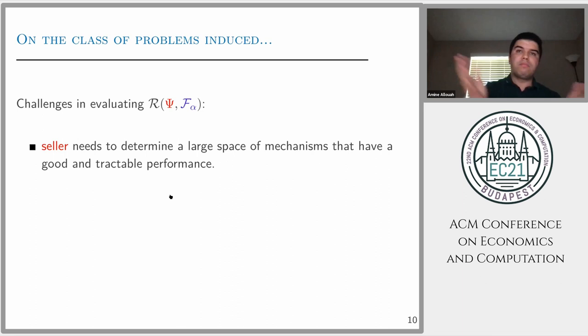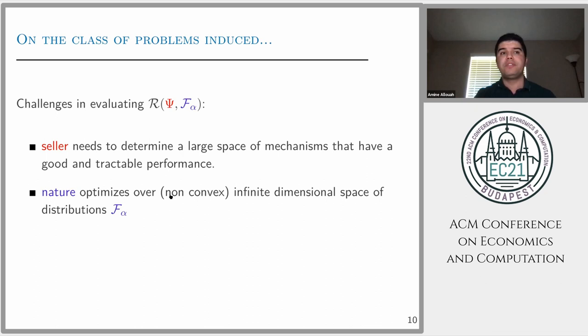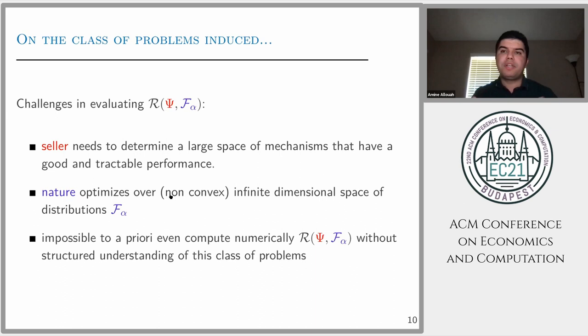Now let's step back and think about this problem. If we have a mechanism and we're facing the MHR class of distribution, to evaluate this ratio is hard because we need to find a large class of mechanisms with good tractable performance. This is one challenge. The second challenge is the nature problem: this infimum I was referring to earlier, when nature takes the inf, it's optimizing over a non-convex and infinite dimensional space of distributions. So traditional optimization techniques might not be applicable here. It's even hard, given a fixed mechanism, to evaluate the performance against the MHR class of distributions without understanding the structure of this problem.